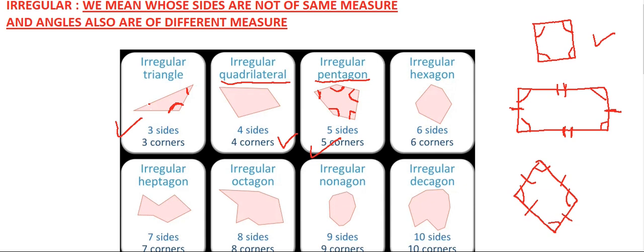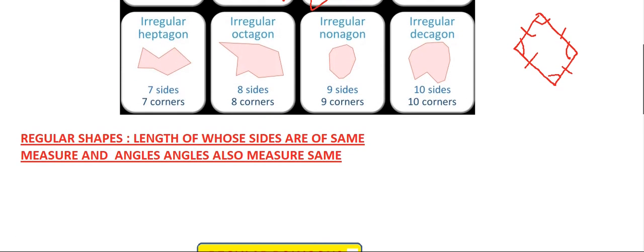A hexagon has six corners, six sides, and six angles, but here the sides and angles are of different measures — so this is an irregular hexagon. Similarly, a heptagon means seven sides and seven corners. An octagon means eight sides and eight corners. It is irregular because some angles are obtuse and some are acute. The ninth side figure is known as a nonagon, and a decagon has ten sides — these are also irregular shapes.